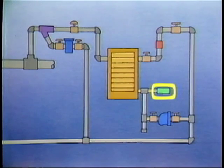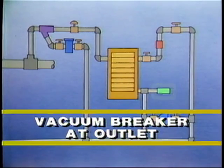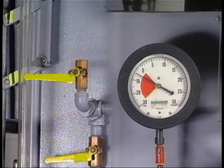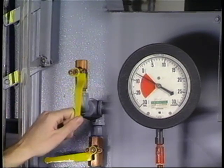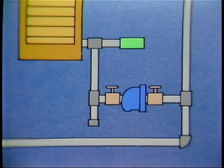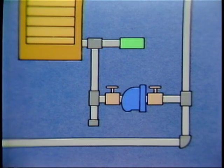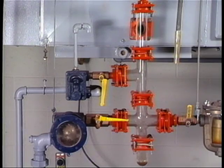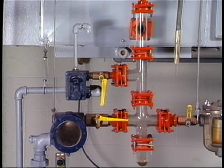A vacuum breaker should also be installed at the coil outlet because vacuums first form at the coil discharge. These devices open to atmosphere whenever a vacuum forms within a coil, drawing in outside air and breaking the vacuum. They are piped to atmosphere rather than to the return line in order to avoid drawing condensate into the coil from a flooded return line. A vacuum inside the coil will prevent condensate drainage from the coil to the higher-pressure outside of the system even when the trap is wide open.